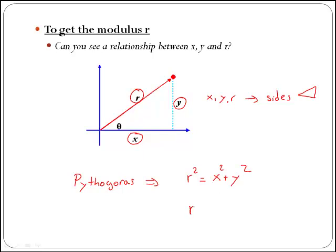In order to get r, we will take the square root of x squared plus y squared. That's the formula we will use to get the modulus of a complex number.